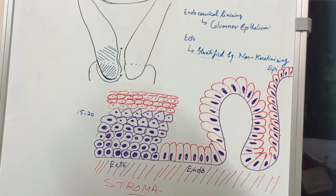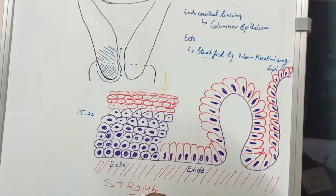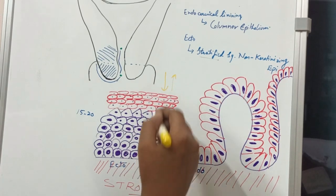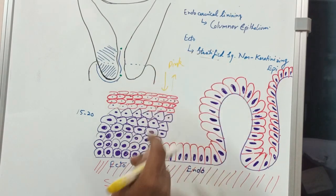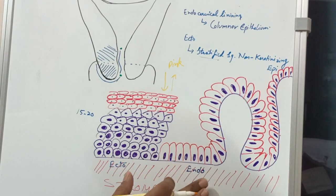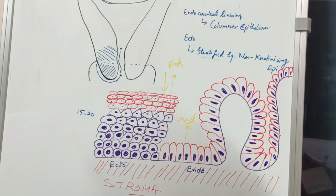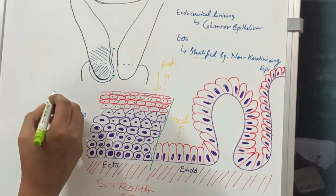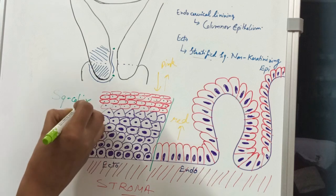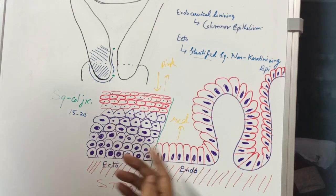When we do colposcopy, there is incident light and reflected light. When light falls on the squamous epithelium, it travels through all the layers and reflects back through the stroma, which is reddish in color but appears as pink because it passes through many layers. In the endocervical area, the stroma is very near to the surface, so the reflected color will be red. The squamocolumnar junction appears as a very sharp and demarcated line because of the height difference between the ecto- and endocervical linings.